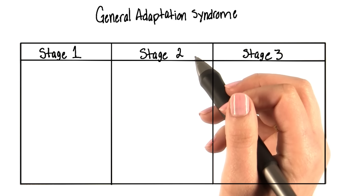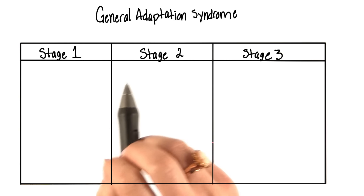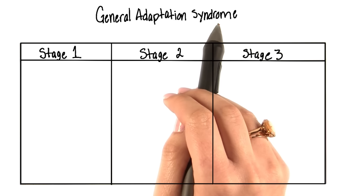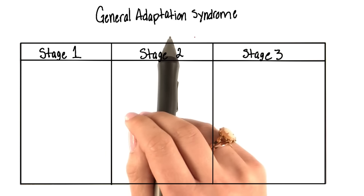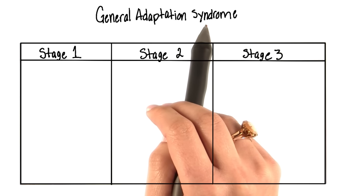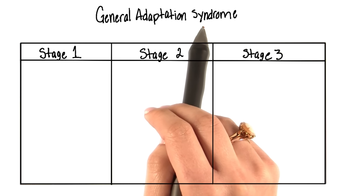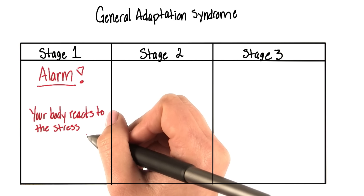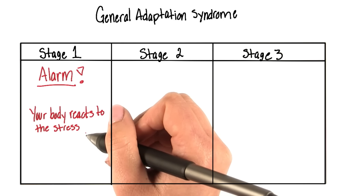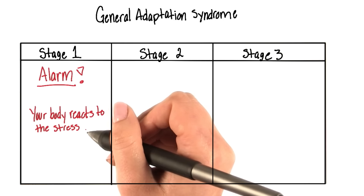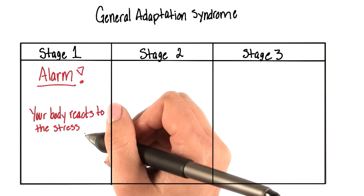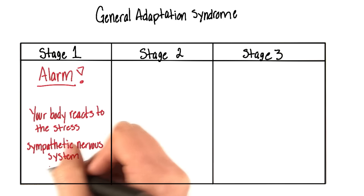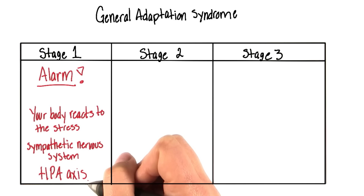Thanks Greg. The three stages are what Selye referred to as the general adaptation syndrome. To recap, general adaptation syndrome consists of three stages. First is the alarm stage. This is when your body first reacts to the stressful or threatening situation with activation of the sympathetic nervous system and the HPA axis.